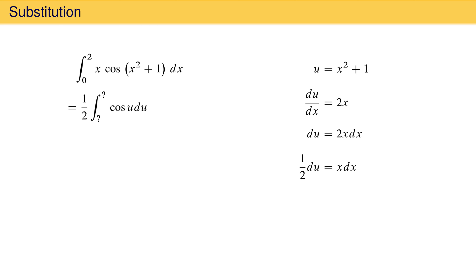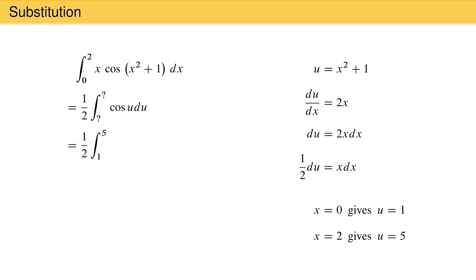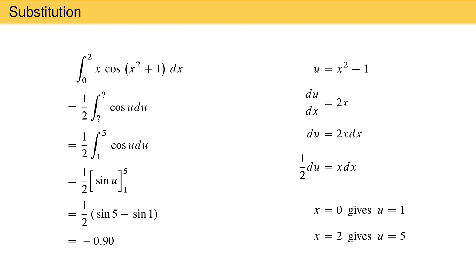Because we have carried out substitution, the bounds of integration are not the same and we need to find the new bounds for u by plugging the original bounds into u equals x squared plus 1. The lower bound x equals 0 gives u equal to 1, and the upper bound x equals 2 gives u equal to 5. The integral becomes 1 half times the integral from 1 to 5 of cosine u du. Evaluating gives 1 half times sine u evaluated from 1 to 5, which is 1 half times sine 5 minus sine 1. The decimal result is negative 0.9. Always be careful with the bounds of integration when using substitution.